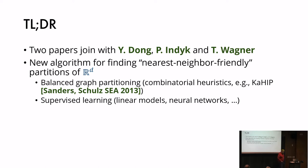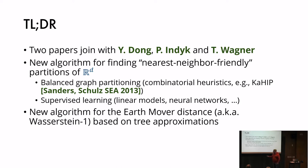The first result is about obtaining space partitions of d-dimensional space which are nearest-neighbor-friendly. The algorithm is based on balanced graph partitioning followed by supervised learning. This work is not really a theory work — I will not show any proofs — but it's heavily based on some theoretical work we've done before. The second result is a new algorithm for the Earth Mover distance, also known as Wasserstein-1 distance, based on tree approximations.